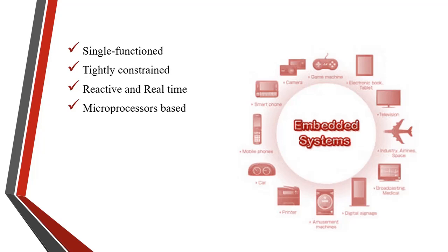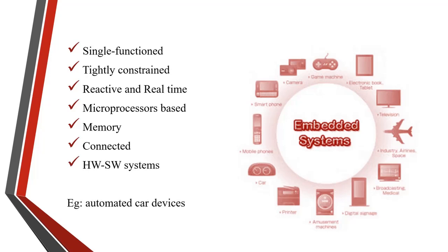Embedded systems are microprocessor-based — they must be a microprocessor or microcontroller based system. We may use an 8086 or 8085 chip connected to different peripherals for specific tasks. They have memory — the software usually embeds on ROM, and no secondary memory is needed as in computers. They are connected to peripherals to collect input and provide output. They are hardware-software systems: software is used for features and flexibility, while hardware is used for performance and security.